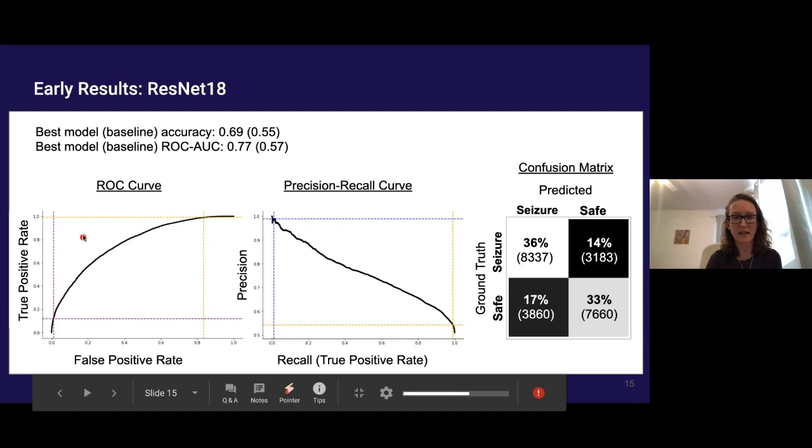What does this mean in practice? If I want to catch 99% of all of the upcoming seizures, then I'm also going to label just over 80% of the safe episodes as seizures. So we still have somewhere to go, but we're not at chance.